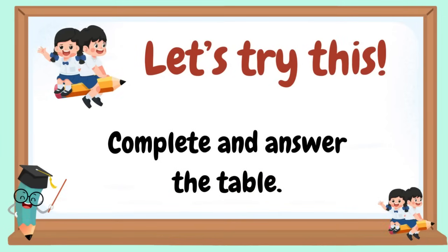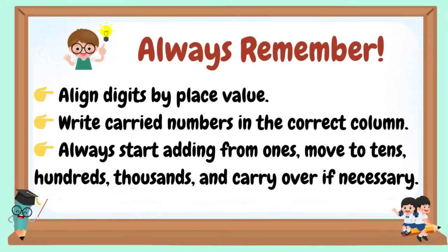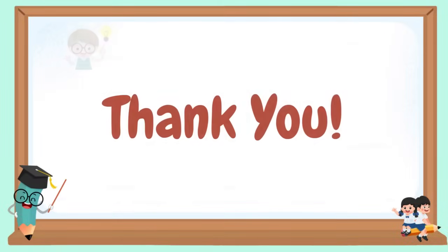Let's try this: Complete and answer the table. Always remember: Align digits by place value. Write carried numbers in the correct column. Always start adding from ones, then move to tens, hundreds, thousands, and carry over if necessary. Thank you.